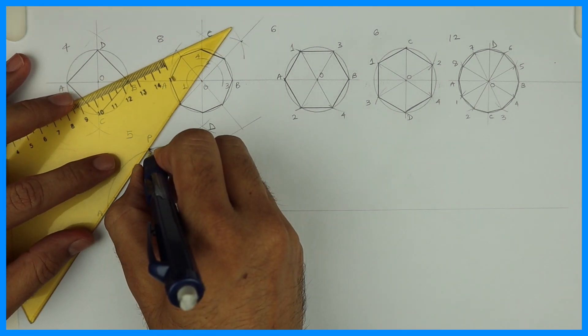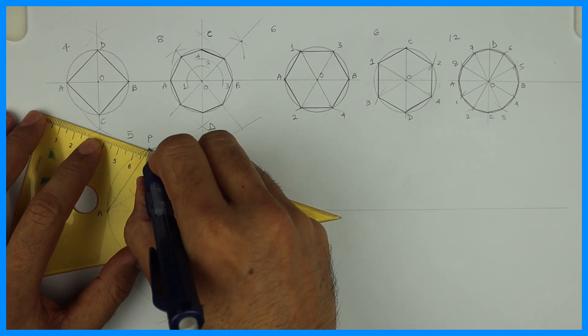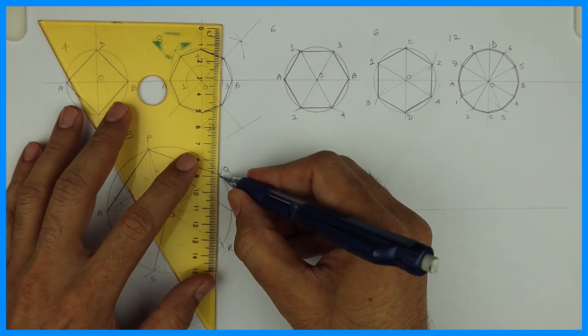Now join A to P, P to Q, Q to R, R to S, and A to S. So you will get the required pentagon.